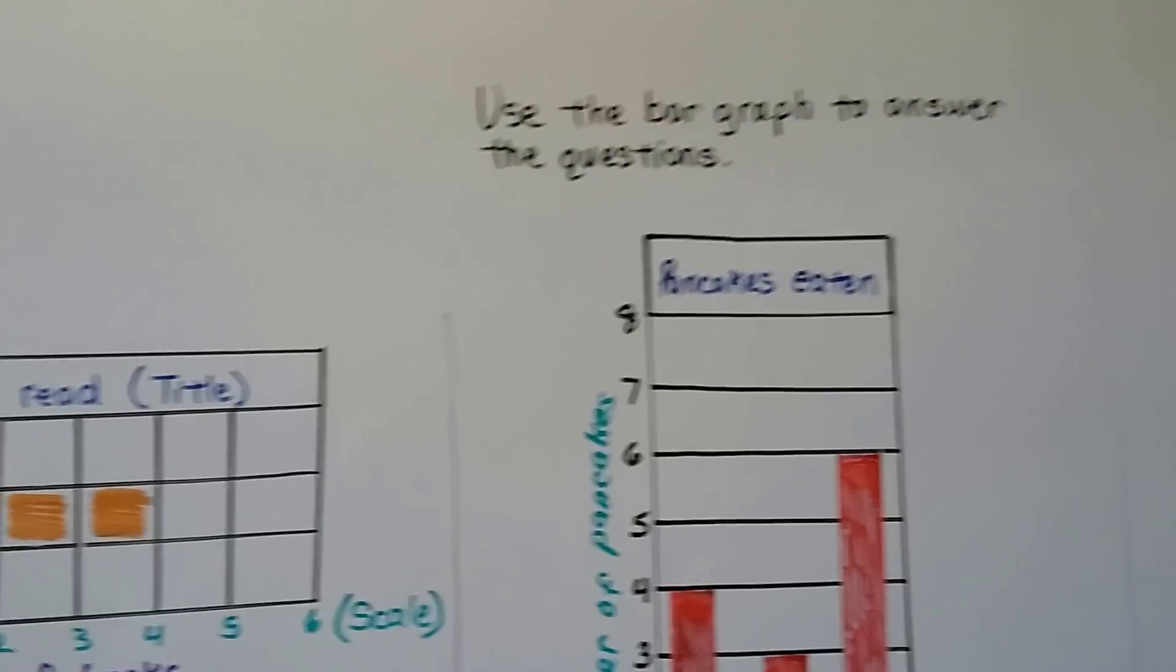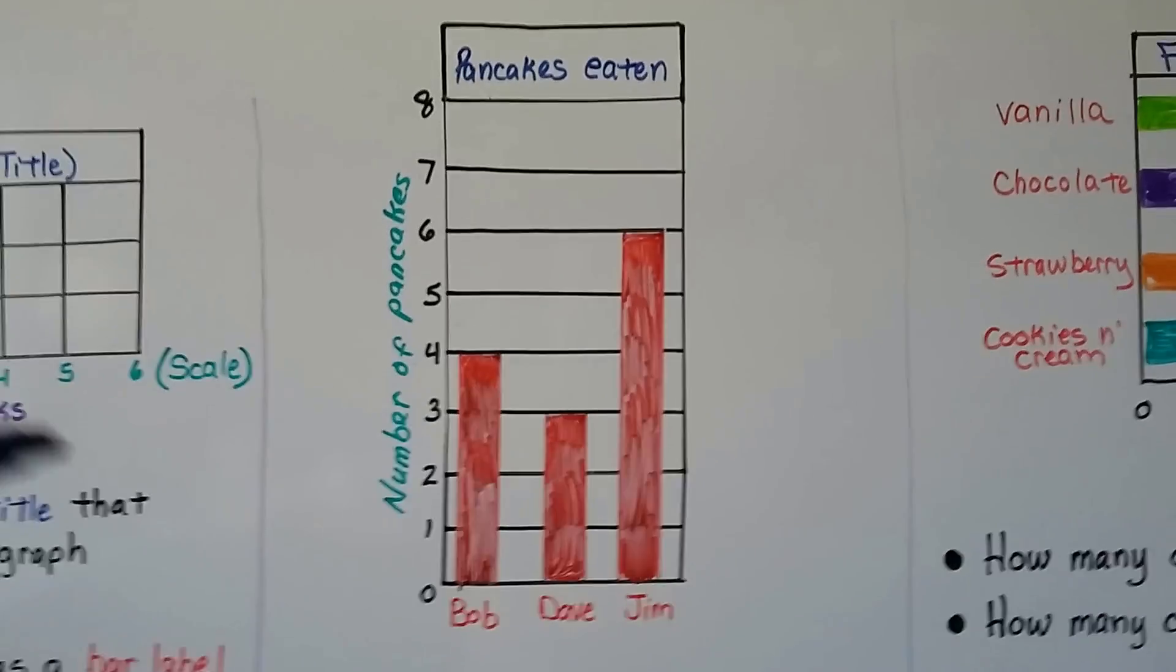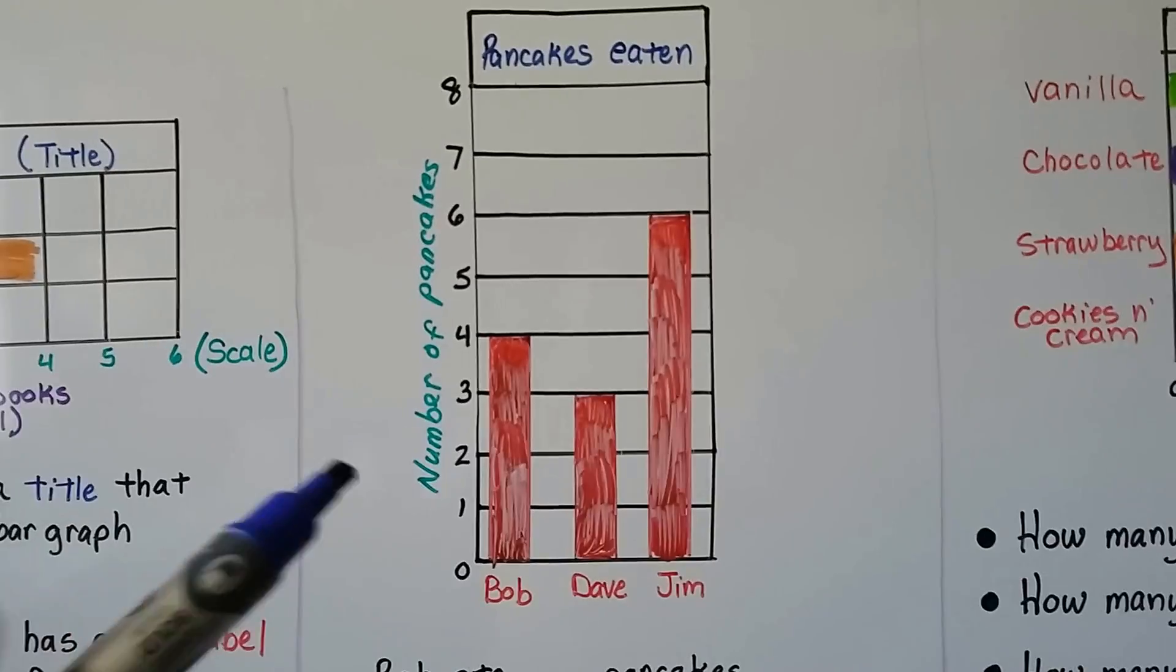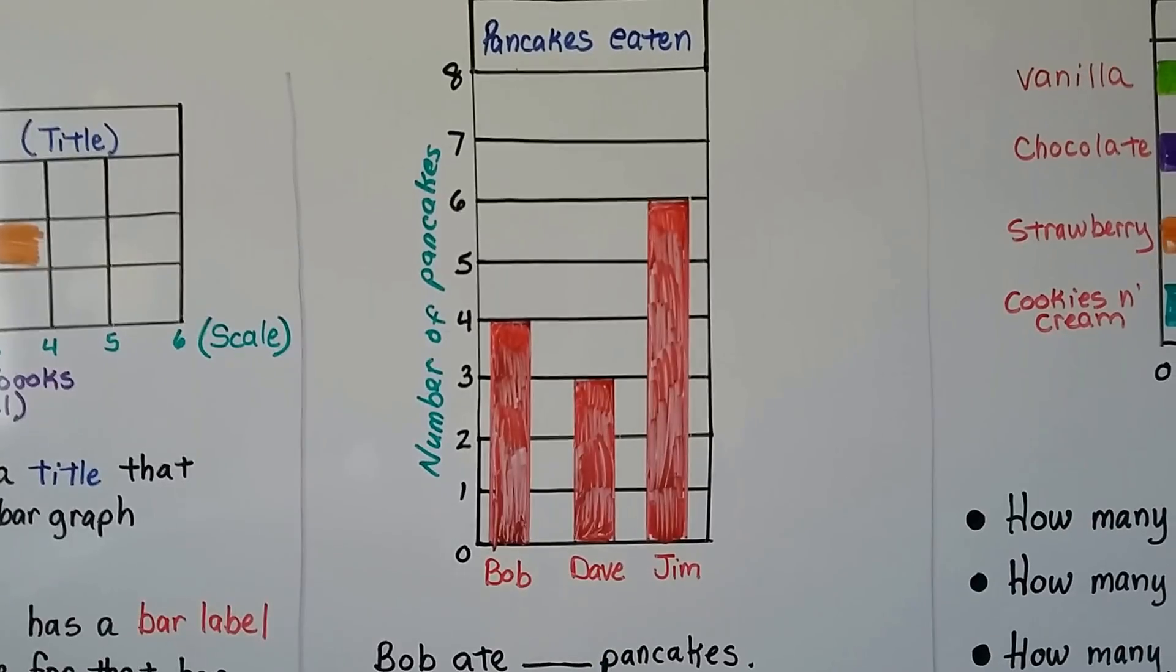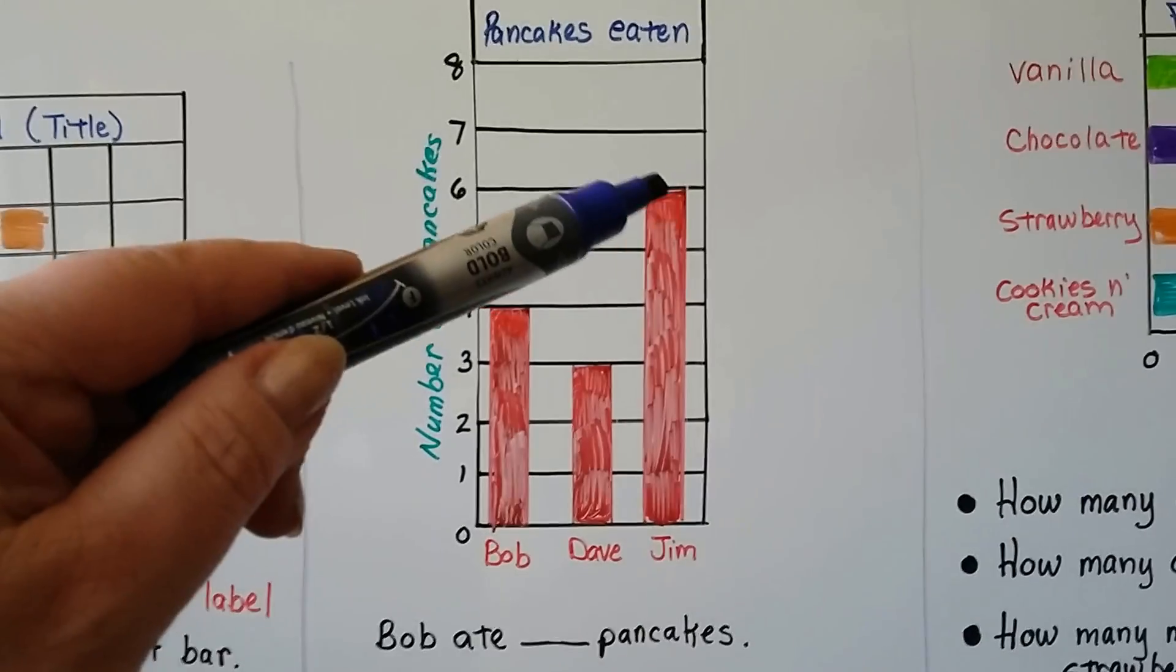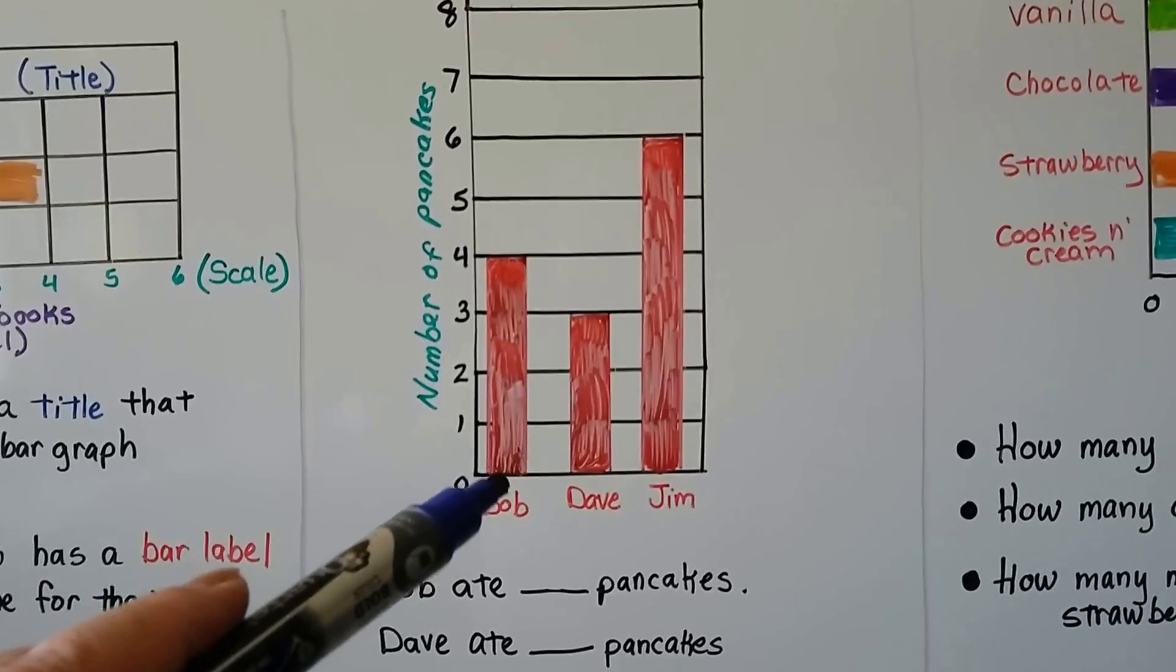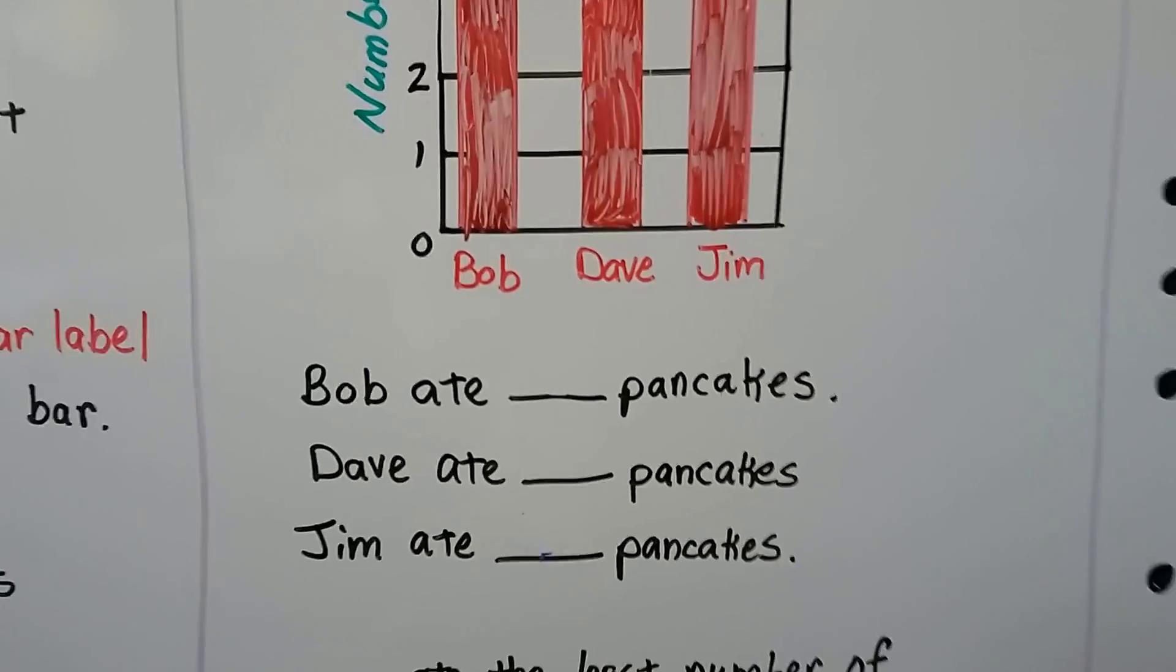We can use the bar graph to answer questions. Here's a bar graph showing Pancakes Eaten. We can see the scale goes from zero to eight, and the scale label says number of pancakes. We can see the bar labels Bob, Dave, and Jim. It's very easy to look at this and tell who ate the most. We can see Jim's bar is the tallest, so he ate the most. Bob ate blank pancakes. We look at Bob's bar, follow it up to the scale, and see he ate four.